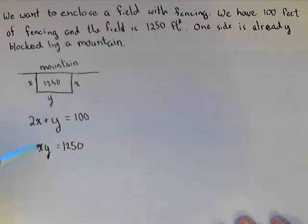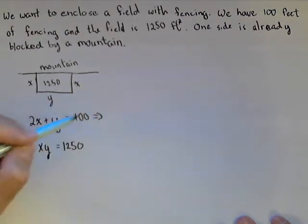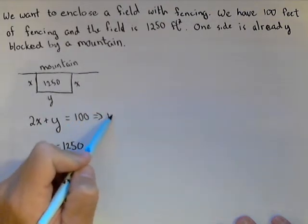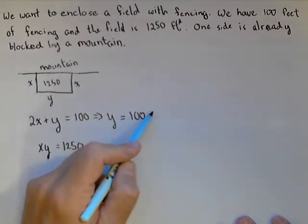So, we have two equations, each with x and y. So, in this, we're going to use substitution in order to get our equation in terms of one variable. So, let's take this first one and solve it for y. So, y equals 100 minus 2x.